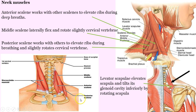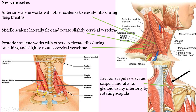The posterior scalene has a little added feature — look at its attachment down below. It's in a good position to be a lever, so it's going to help rotate those cervical vertebrae slightly. A lot of the rotation occurs with the sternocleidomastoid, which is a massive muscle for pulling, but a little bit of help happens here too.